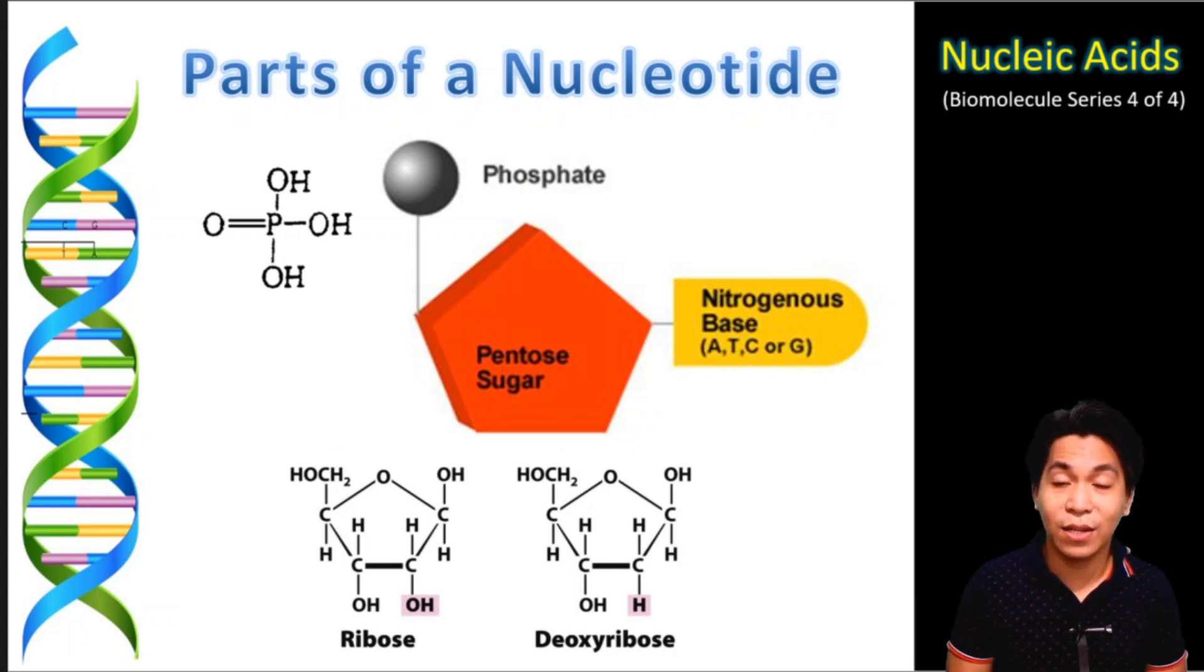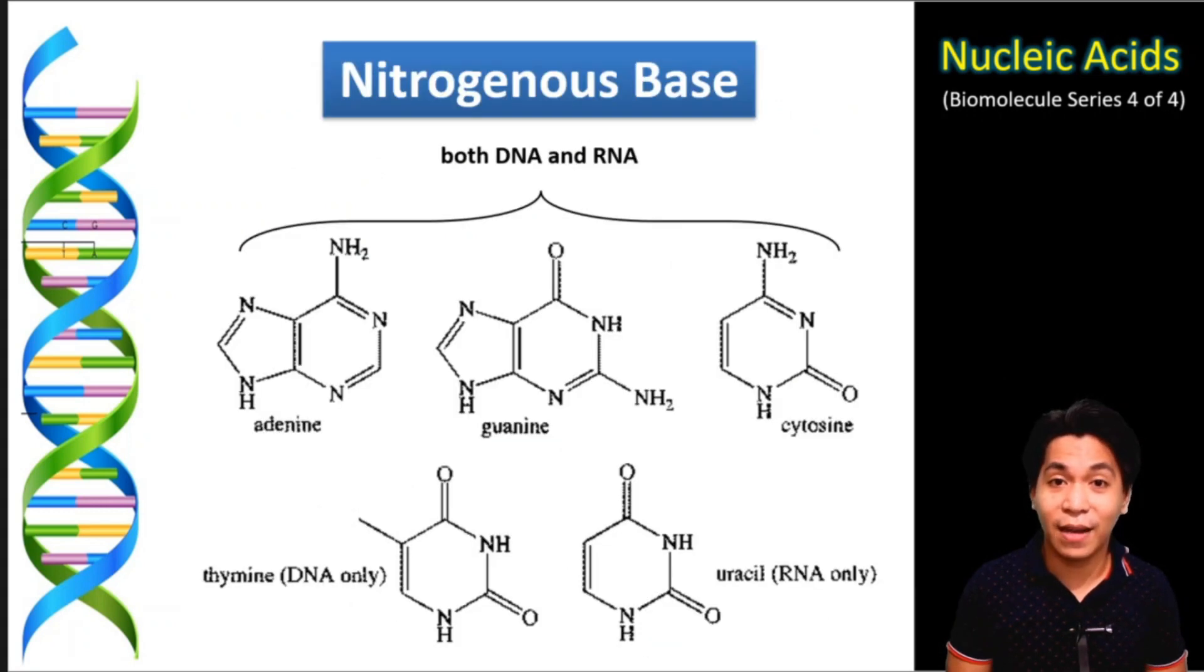Additionally, the identity of the nucleotide also depends on what is the attached nitrogenous base on it. There are five types of nitrogenous bases found in nucleotides. You have the adenine, guanine, cytosine which are all present in both DNA and RNA. And you have the thymine which is only found in DNA and its counterpart in RNA is the uracil.